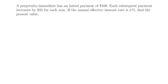Welcome back. Let's start with this example. We have a perpetuity immediate with an initial payment of $100. Each subsequent payment increases by $25 for each year. The annual effective interest rate is 2%. Find the present value.